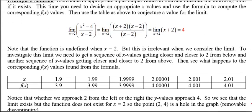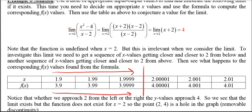Let's look at the table. We want x values that get closer and closer to 2. For the left limit, x values come from below 2 — we could start at 1.9, then 1.99, and I chose 1.9999. Plugging those into the original formula gives us outputs of 3.9, 3.99, and 3.9999. It looks like the y values are getting closer and closer to 4 as x approaches 2 from the left.